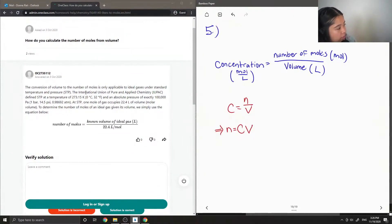Under standard temperature and pressure, International Union of Pure and Applied Chemistry defines STP at a temperature of 273.15 kelvin and an absolute pressure of exactly 100,000 pascals. At STP, one mole of gas occupies 22.4 liters of volume.